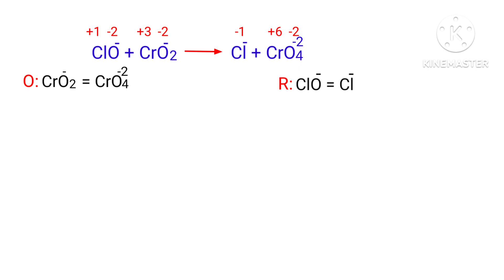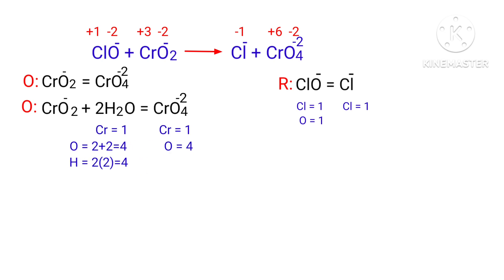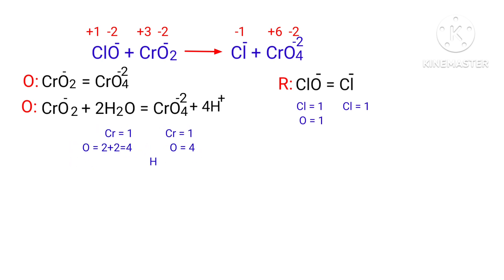Now balance the number of atoms in the two half reactions. In the oxidation half reaction, to balance the oxygen atoms you can add water molecules. Once the oxygen atoms are balanced, balance the hydrogen atoms by adding H⁺ ions. Now the number of atoms are balanced in the oxidation half reaction.